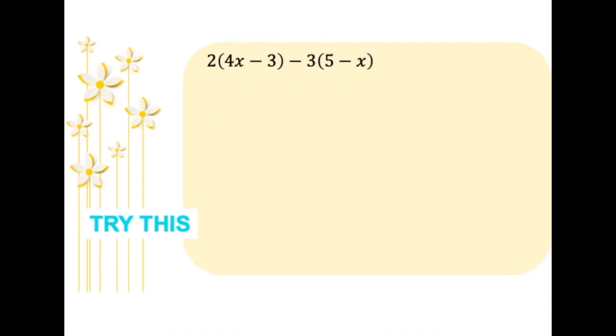The second question. The first thing that we have to do is distribute the number outside of the brackets. So 2 times 4x will be 8x. 2 times negative 3 will be negative 6. Negative 3 times 5 will be negative 15. And negative 3 times negative x will be positive 3x.